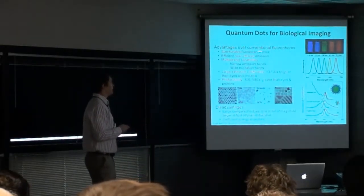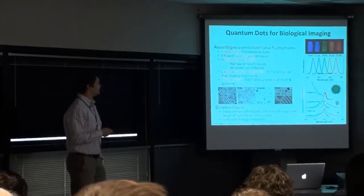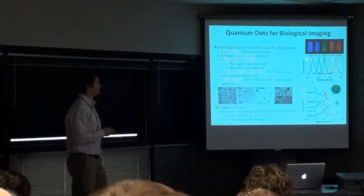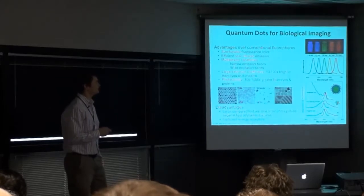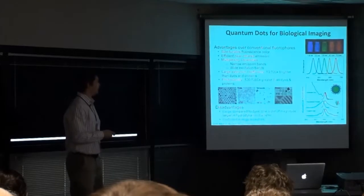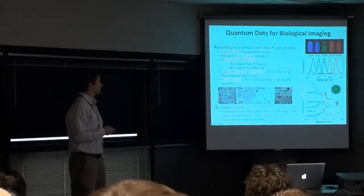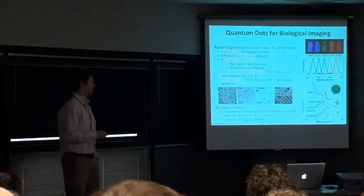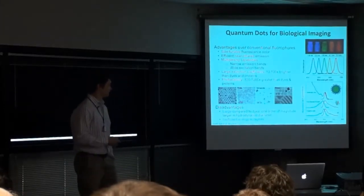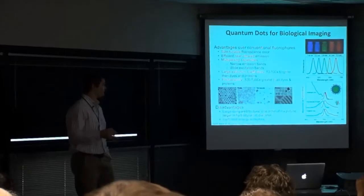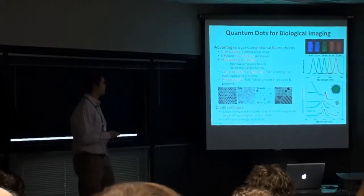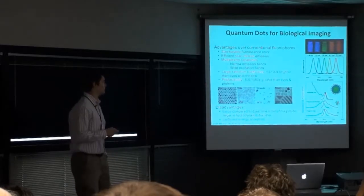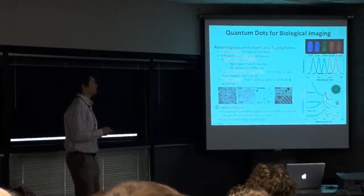Their optical properties have some outstanding attributes. First of all, their fluorescence is size-tunable. Looking at five different sizes of quantum dots made out of the exact same material, from 1.8 nanometers up to 7.3 nanometers, they all have different fluorescence wavelengths depending on size alone. If anybody's ever tried to make a fluorescent dye or protein a different color, it's non-trivial. With quantum dots, you just change the size — let your reaction grow longer to allow larger particles to form, and you get longer wavelengths of emission.